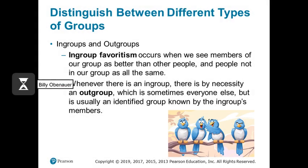Within our organizations, we also have in-groups and out-groups. These aren't formally defined by the company but emerge informally. In-group favoritism occurs when people see members of their own group as better than other groups, and people in other groups are considered the out-group.